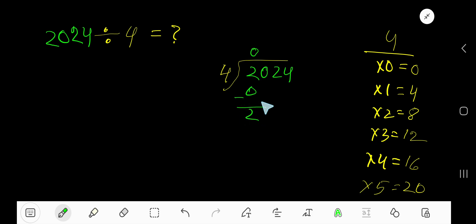Subtract and bring down the 0. 4 goes into 20 how many times? 5 times. So 5 times 4 is 20. Subtract to get 0. Bring down this 2. 4 goes into 2...